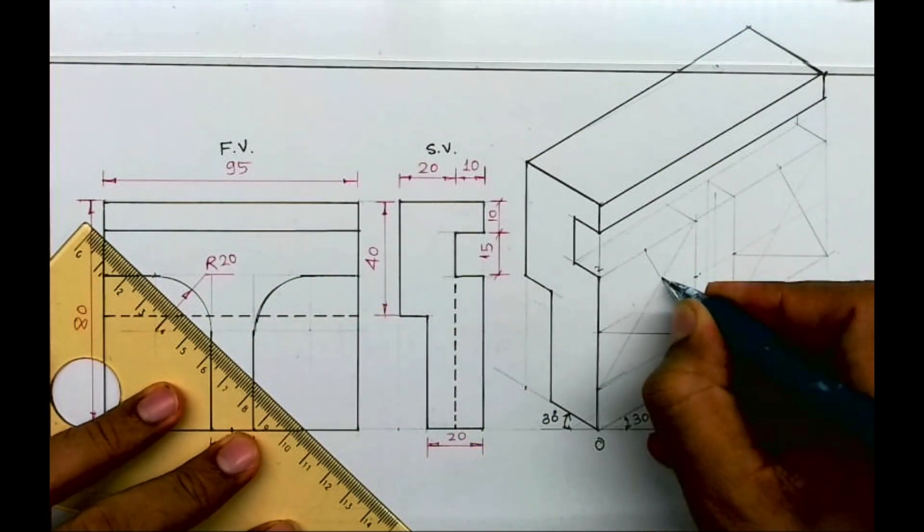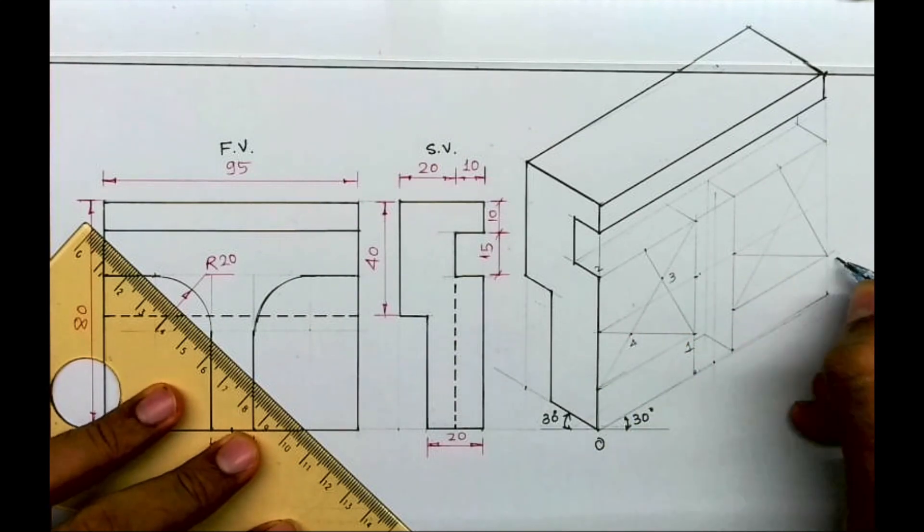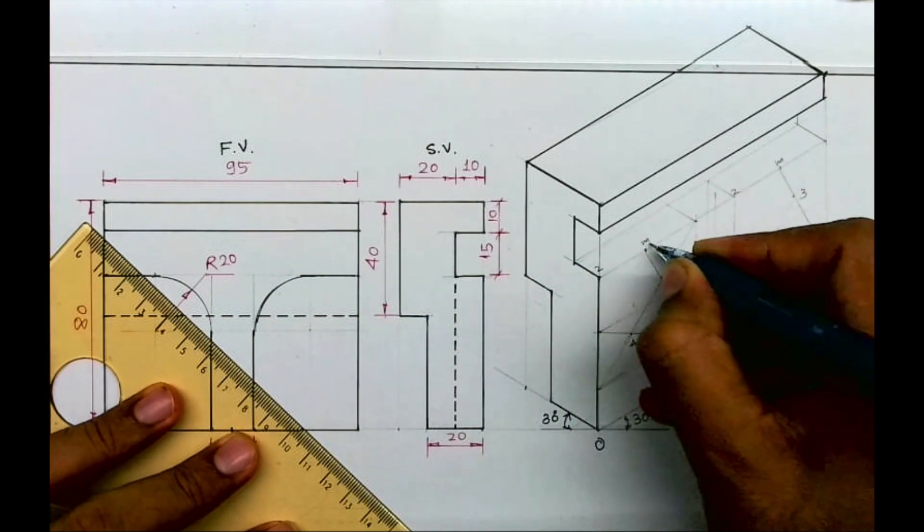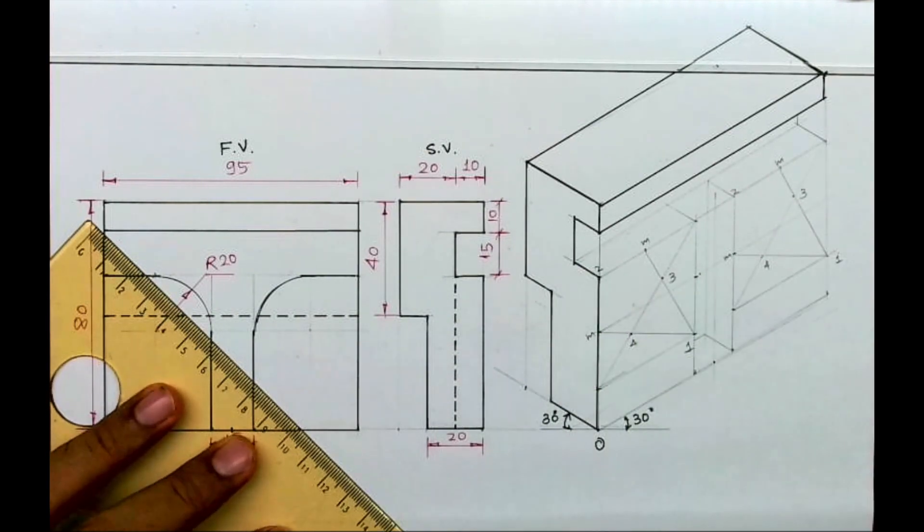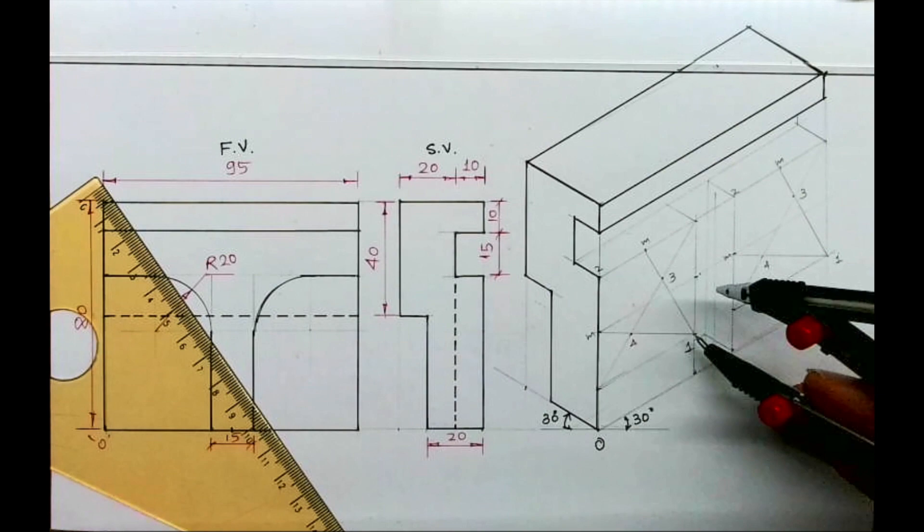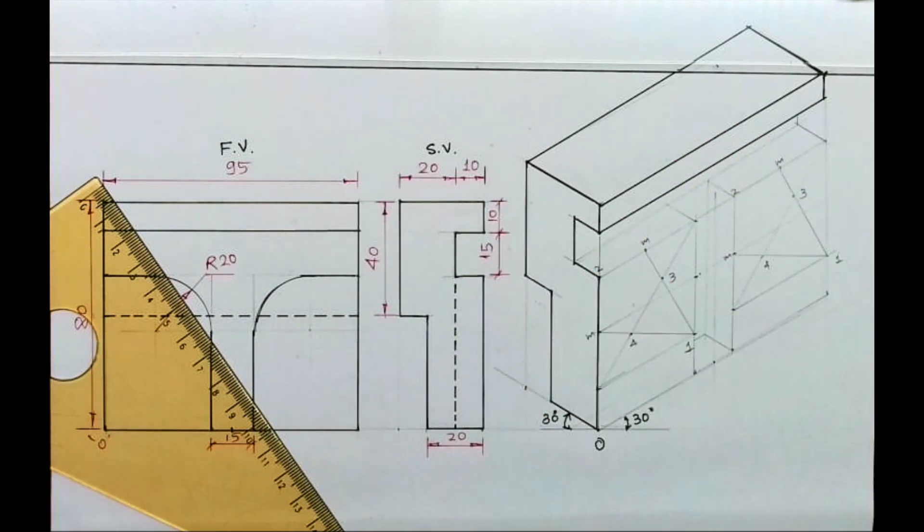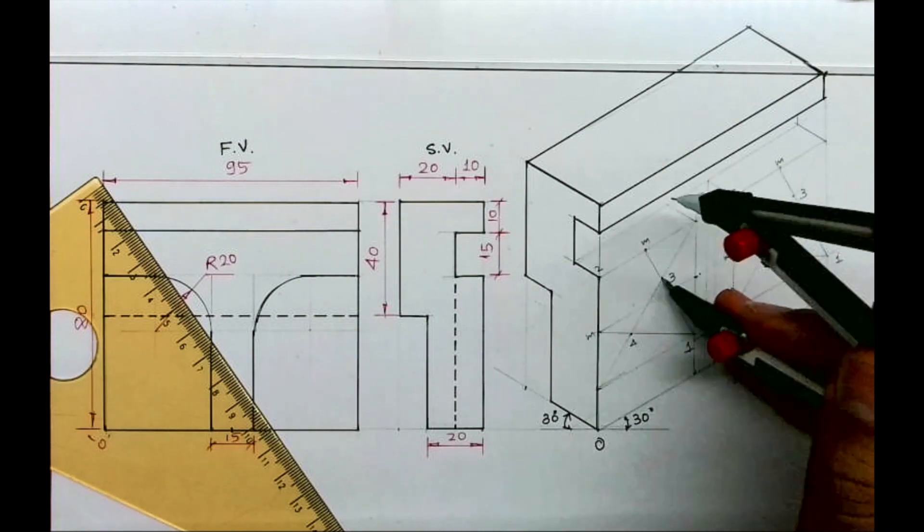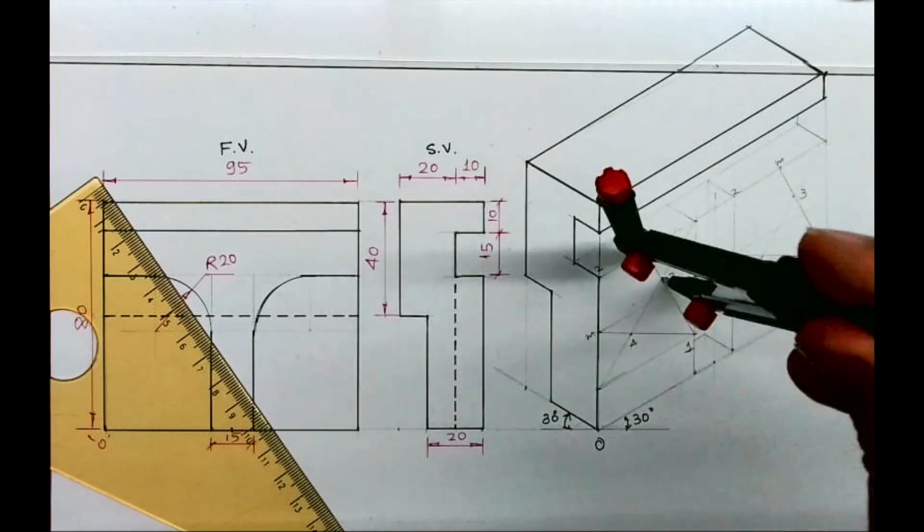This is one, two, three, and four. Same way, here also we write one, two, three, and four. This is M. So from point one we can draw arc, but we don't require that. We take it from three, three to M, and we'll draw arc.